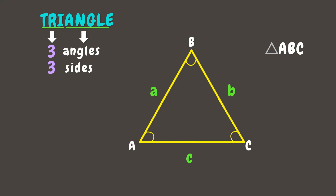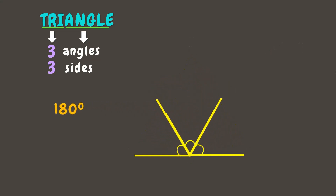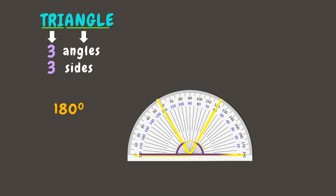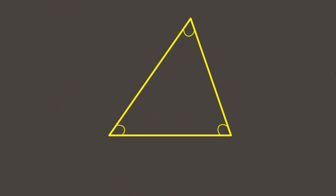We learned in our previous lesson that angles are measured in degrees, and a triangle has a total of 180 degrees. We can see that if we combine the angles to form an angle, we will form a straight angle, which measures 180 degrees. Now we can use this idea in finding the missing measurement of an angle in a triangle. Let's say this triangle has angles that measure 55 degrees and 65 degrees, while the measurement of the other angle is missing or unknown. To find the missing measurement, you can simply add the measurements present and subtract from 180 degrees.